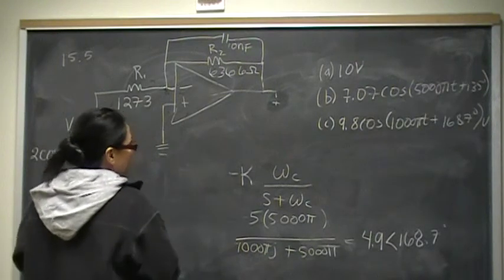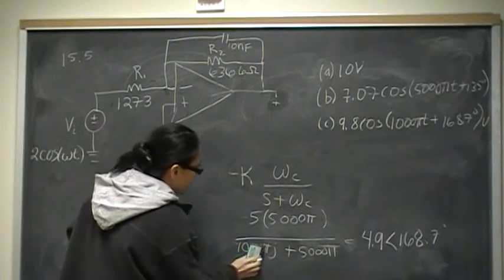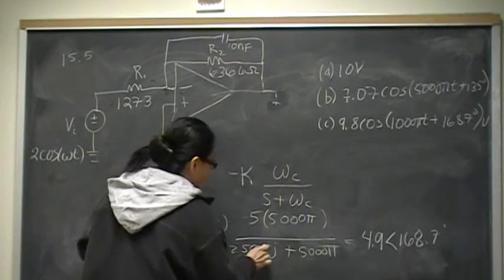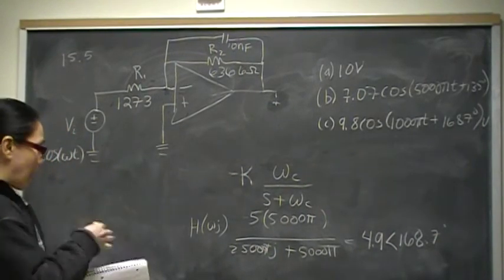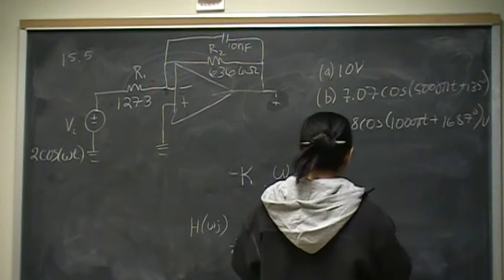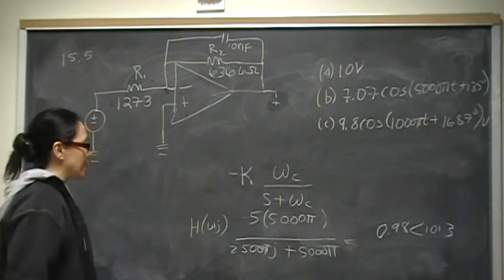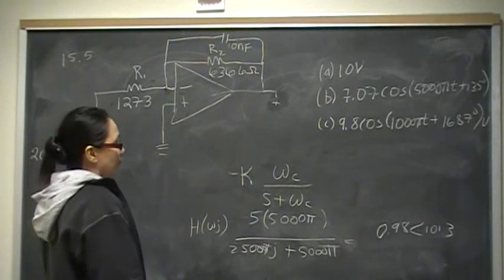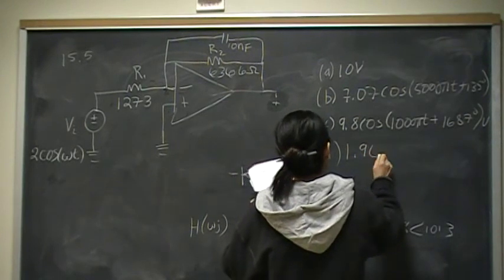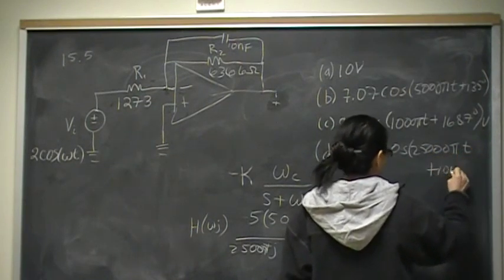Part d asks about a very high frequency — 25,000 pi, which is five times the cutoff frequency. We evaluate H of j·omega with 25,000 pi·j in the denominator. Putting that into your calculator, you find the transfer function has value 0.98 at angle 101.3°. Multiply by V_in of 2, and the answer for part d is 1.96 cosine(25,000πt + 101.3°) volts.